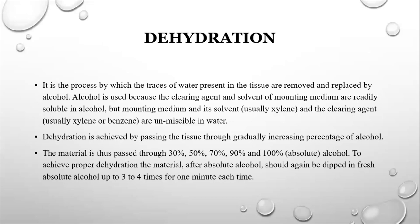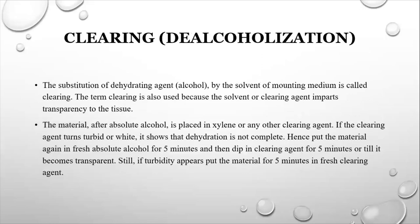Dehydration is achieved by passing the tissue through different grades of alcohol, by passing them to 30% of alcohol, then 50%, then 70%, then 90%, and finally to absolute or 100% of alcohol. To achieve proper dehydration, after absolute alcohol, we should again dip in fresh absolute alcohol our sample for about 3-4 times.